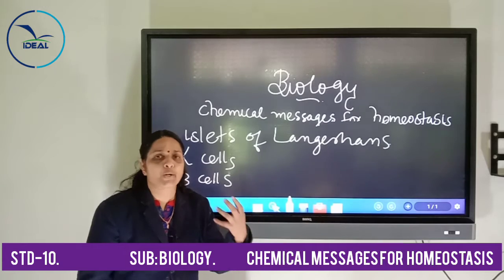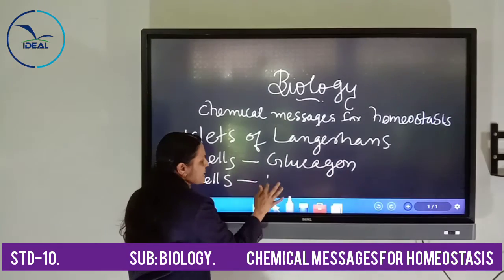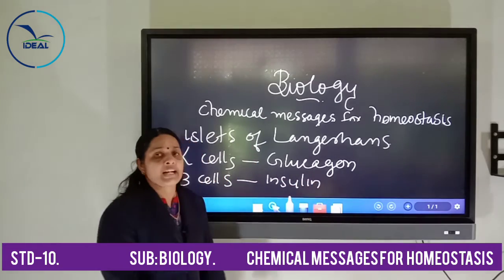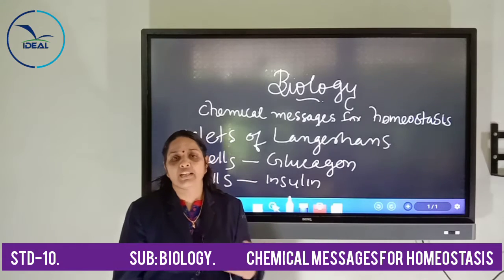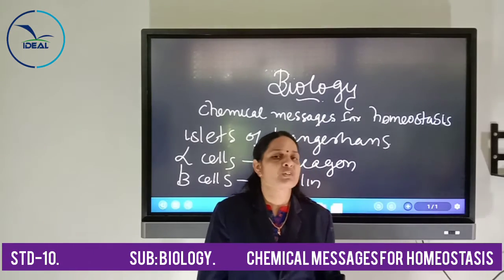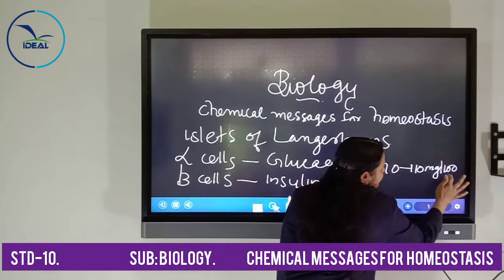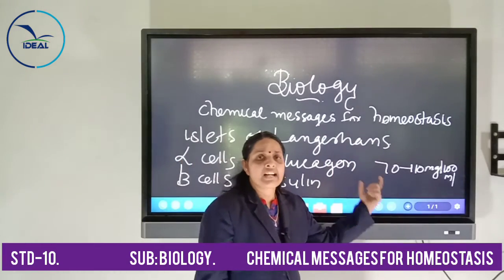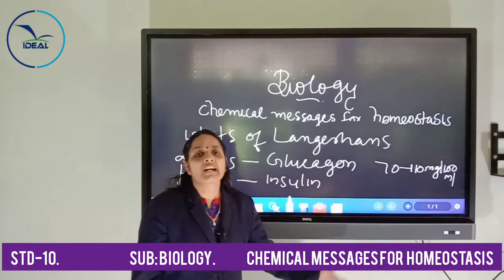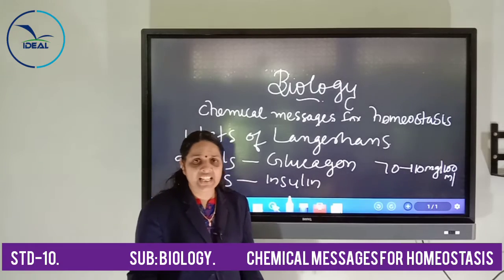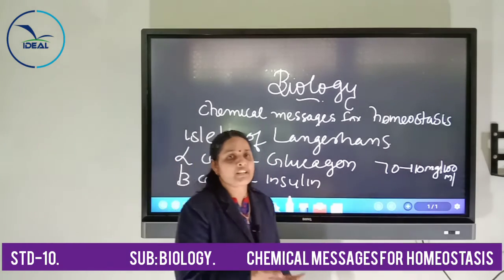Alpha cells are responsible for producing the hormone glucagon, and beta cells are responsible for producing the hormone insulin. By the combined effort of both glucagon and insulin, the normal level of glucose in the human body is maintained. The normal level of glucose is 70 to 110 milligrams per 100 ml — meaning 100 ml of blood contains 70 to 110 milligrams of glucose. If it is below 70 or above 110, both conditions are harmful to the human body. Whenever there is a variation, the respective glands are stimulated to produce the required hormone and restore the normal glucose level.